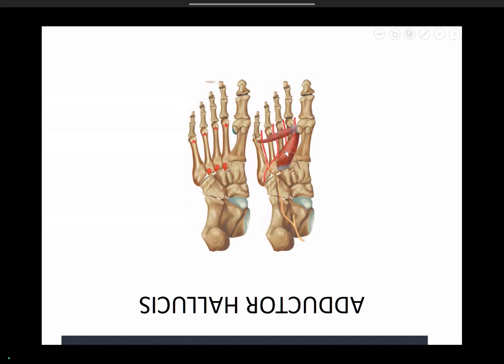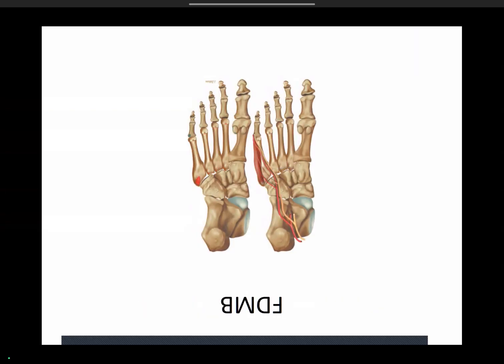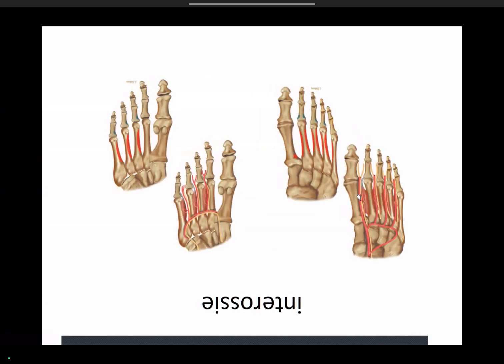The adductor hallucis has two heads and inserts on the lateral aspect of the first proximal phalanx. Flexor digiti minimi brevis inserts along the lateral aspect of the fifth proximal phalanx. Then the interossei — plantar and dorsal — the last layer of the sole of the foot. These are only notable when there is a stress fracture and edema within the fourth layer of the sole of the foot.